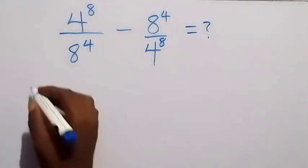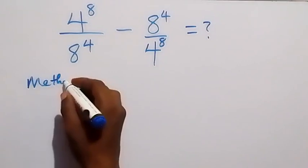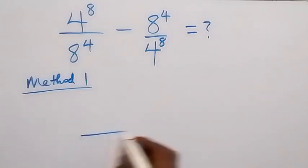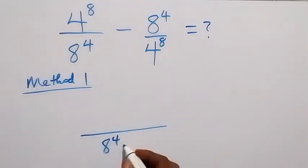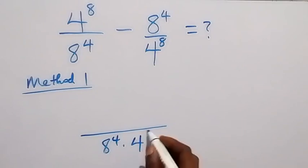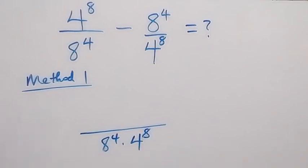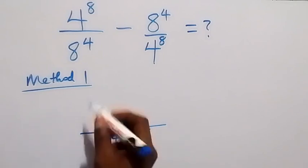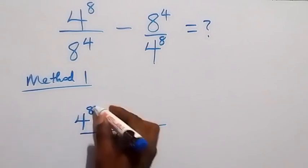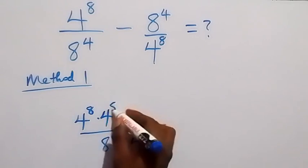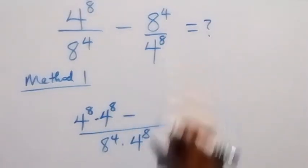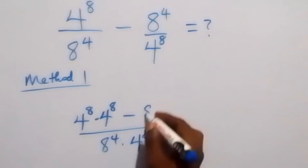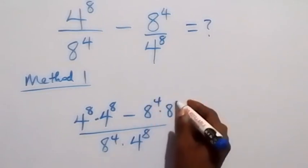Let's look at the first method. We take the LCM here as 8 raised to power 4 times 4 raised to power 8. That means 8 raised to power 4 goes into 4 raised to power 8, which we can write as 4 raised to power 8 times 4 raised to power 8, then minus 4 raised to power 8 equals 8 raised to power 4, and it will multiply to give 8 raised to power 4 times 8 raised to power 4.